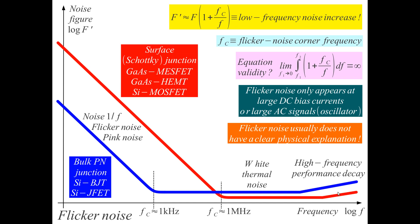Flicker noise is a low-frequency effect, which is why we do not consider it when building radio frequency amplifiers — it happens at much lower frequencies. So why is this low-frequency noise so important? The flicker noise depends much on device geometry and design. In bulk PN junctions, flicker noise is three orders of magnitude smaller than in surface junctions like Schottky junctions, GaAs FETs, and silicon MOSFETs. Flicker noise is much lower in bulk PN junction devices: bipolar transistors and junction FETs.